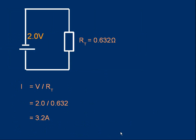To get the current: we know the EMF is 2 volts and the total resistance is 0.632 ohms (using the more accurate value avoids rounding errors). I = V/R = 2 volts divided by 0.632, which gives 3.2 amps to two significant figures. That's the current through the resistor and therefore the same current through the cell.